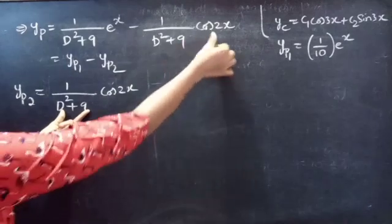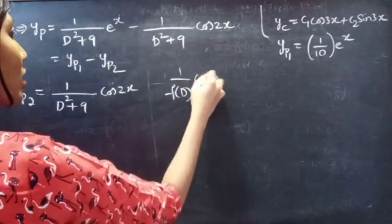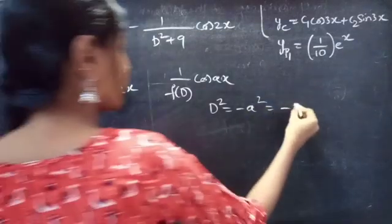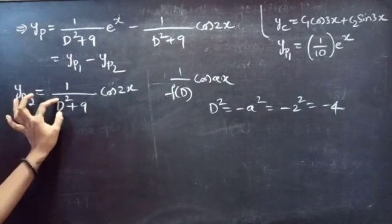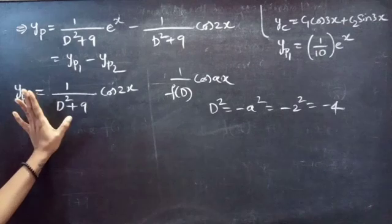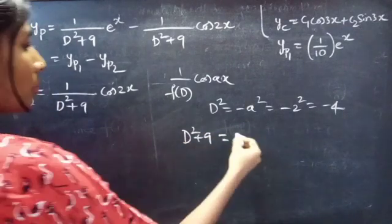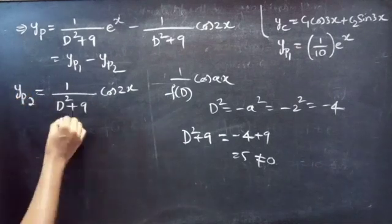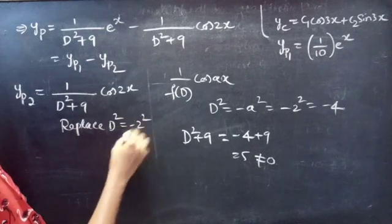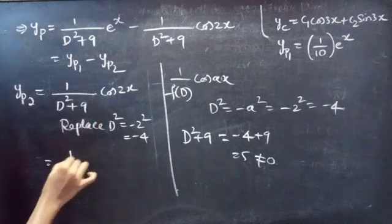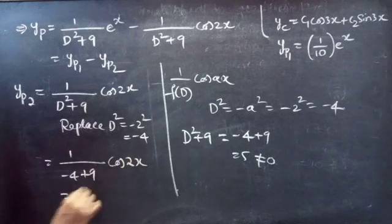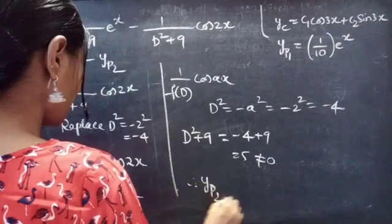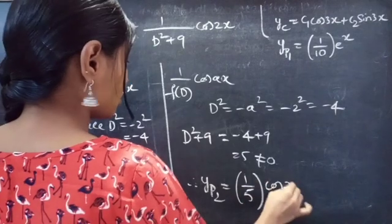yp2 = [1/(D² + 9)]·cos 2x. This is of the form (1/f(D))·cos(ax) with a = 2. We replace D² by −a² = −2² = −4. Checking the denominator: −4 + 9 = 5, which is non-zero. So replacing D² by −4 gives [1/(−4 + 9)]·cos 2x = (1/5)·cos 2x. Therefore yp2 = (cos 2x)/5.